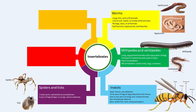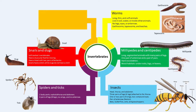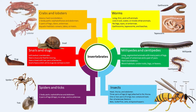Snails and slugs are a type of soft-bodied invertebrates. They have a muscular foot which they use to move and secrete mucus. They have a head with two pairs of tentacles which are sensory organs. Snails have a shell which protects their body while slugs do not have a shell. Crabs and lobsters have a hard exoskeleton as a protective outer covering. They have two body parts — cephalothorax and abdomen — five pairs of legs, one pair of claws and a pair of antennae. They live in aquatic habitats such as oceans, lakes or rivers.